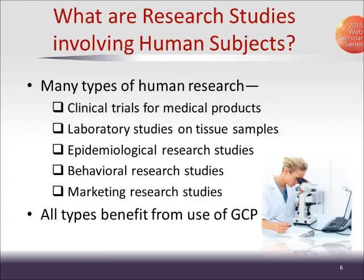What are some of the research studies involving human subjects? We are all familiar with the CTN and with clinical trials, which are interventions — usually randomized interventions — where we're adhering to some kind of a clinical protocol. But it also includes laboratory studies on tissue samples, some epidemiology and behavioral research studies, and also some of the marketing research studies, such as phase four or post-marketing studies. All types of studies that are conducted would really benefit from the use of GCP.